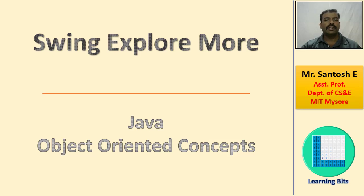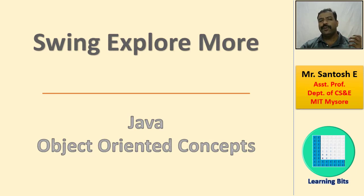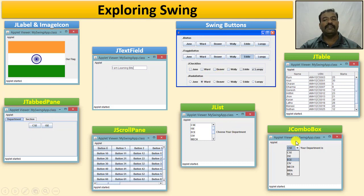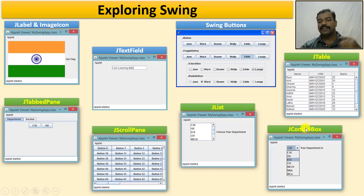Welcome to the session. In this session we will explore more components of Swing. In the previous session we have seen few important concepts like JLabel, ImageIcon, the text field, and the Swing button. These are a few other components which we were supposed to discuss, hence I am putting the discussion of all these components in this current session.